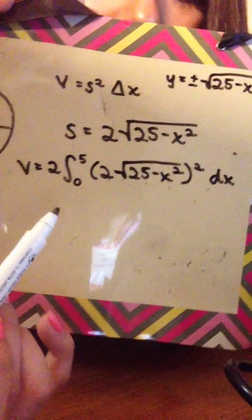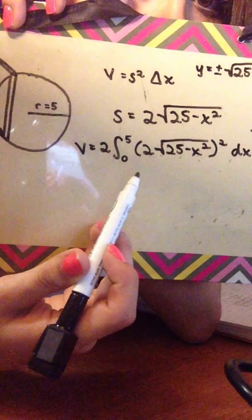That's your side. To find the volume, you're going to take the integral — you can do negative 5 to 5, but it'll probably be easier to just do 0 to 5 and then double that. So what you'll have for your integral is 2 times the integral of 2 square root of 25 minus x squared, squared, times dx.